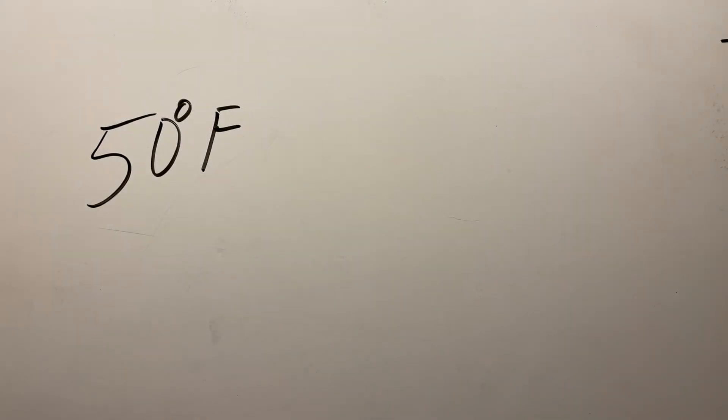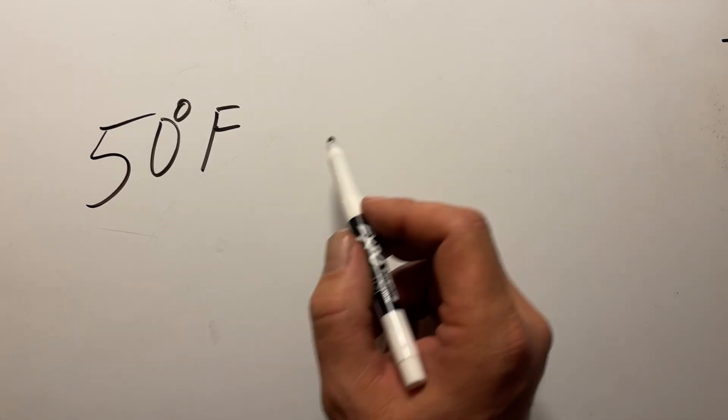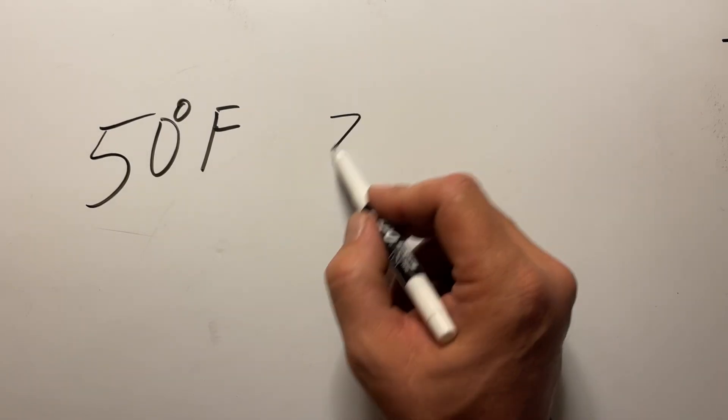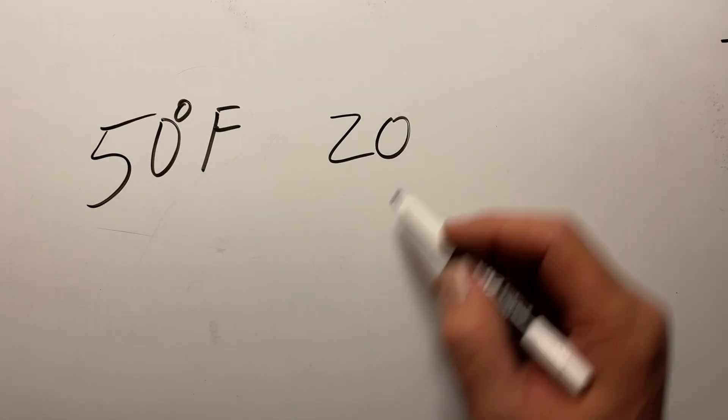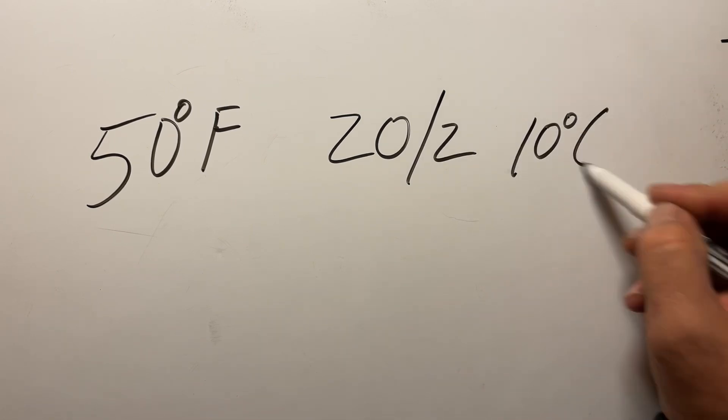So the first shortcut that I'm going to show you is something that a lot of people teach, and it's really easy. So the first thing you want to do is take your degrees Fahrenheit and subtract 30 from that number. That will leave us with 20. And then we take that answer and divide it by 2, and that gets us 10 degrees Celsius.